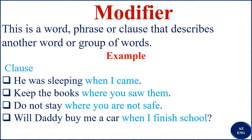And 'I live where I see peace' — 'where I see peace' talks about place; it is an adverb clause that modifies the action 'live.' So you can have a modifier as a word, as a phrase, or as a clause — this is something you should not forget.